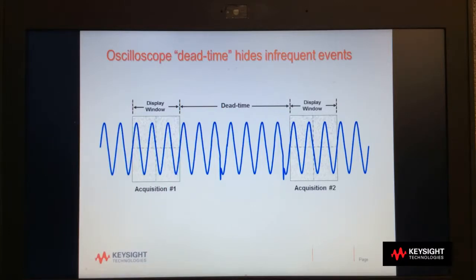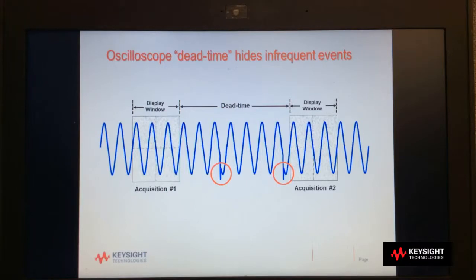All scopes have dead time, some more than others. But as you can see, here two glitches occurred during the scope's dead time, which means that the scope missed them.